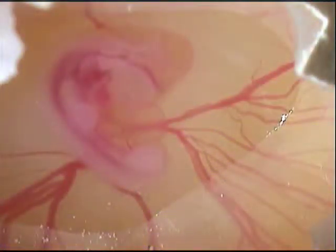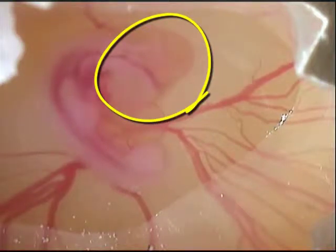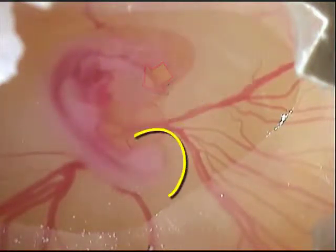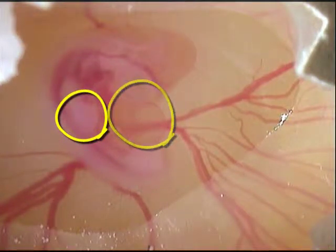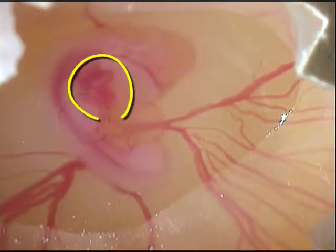Big features of the embryo are visible though: the head with the eye cup, where pigment of the retina is formed early; the tail, partially hidden by the lower extremity; the early allantois; the forelimb; and finally the heart, which is still linear at this stage.